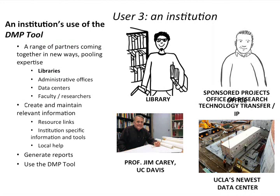At an institutional level — the third type of user — it's a range of partners. As Todd was sharing, at an institutional level you have the libraries, administrative offices, data centers, faculty, and researchers interacting with this tool. On the UC campus, it's the sponsored projects office, contracts and grants. Contracts and grants people don't want to be bothered with creating a data management plan — they don't have that expertise, but they're happy to work with us on that. The office of research, the same. UC last year received over $600 million in NSF funding. They're very aware of this new requirement and think it'll be a competitive edge if we put something together that helps researchers get their data management plan out the door without getting tangled up in all the details.